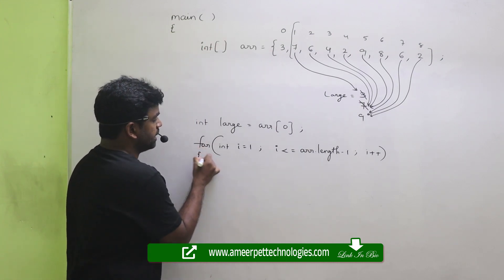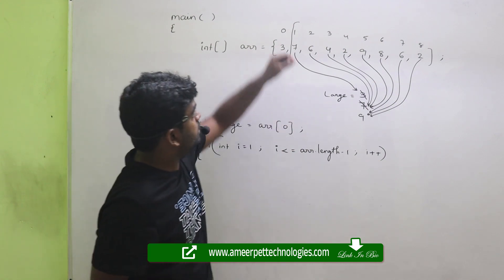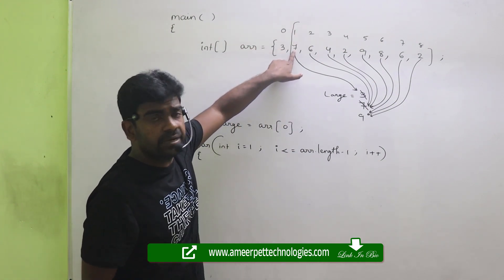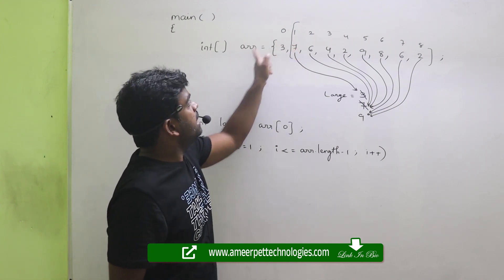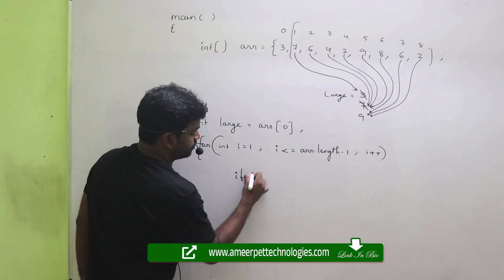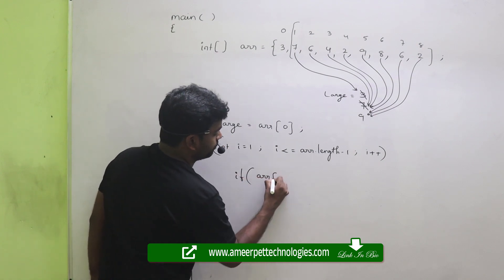Now how to compare? See, remember, if index element, how you access this index element? ARR of 1, ARR of 2 is nothing but if ARR of I.